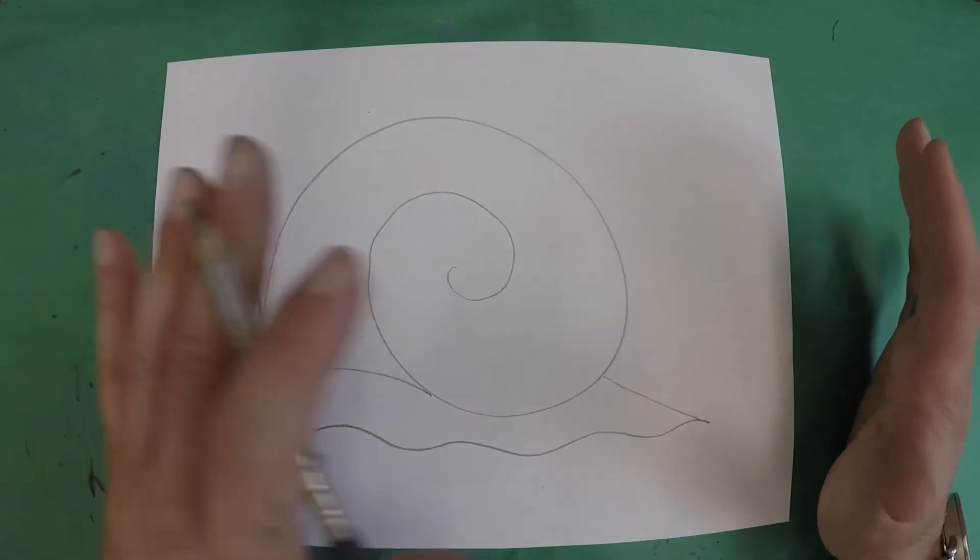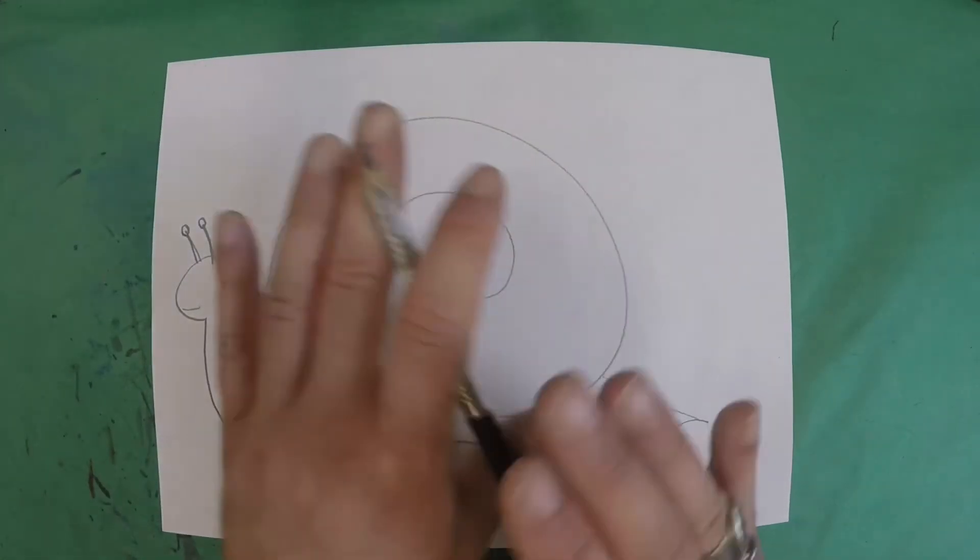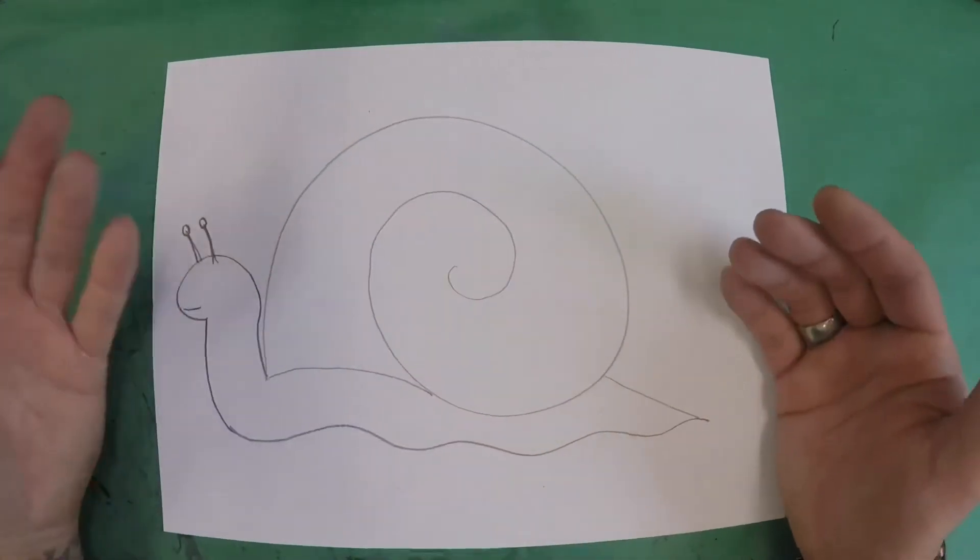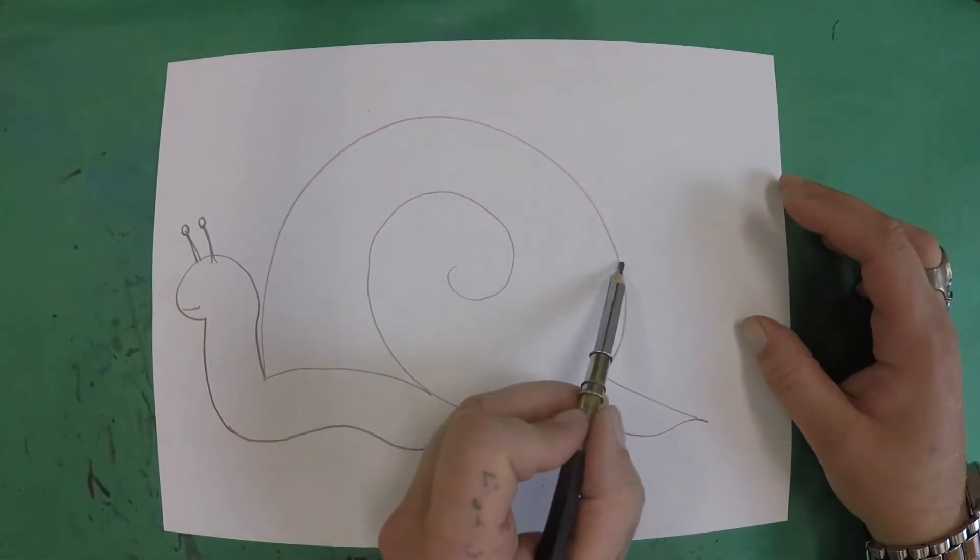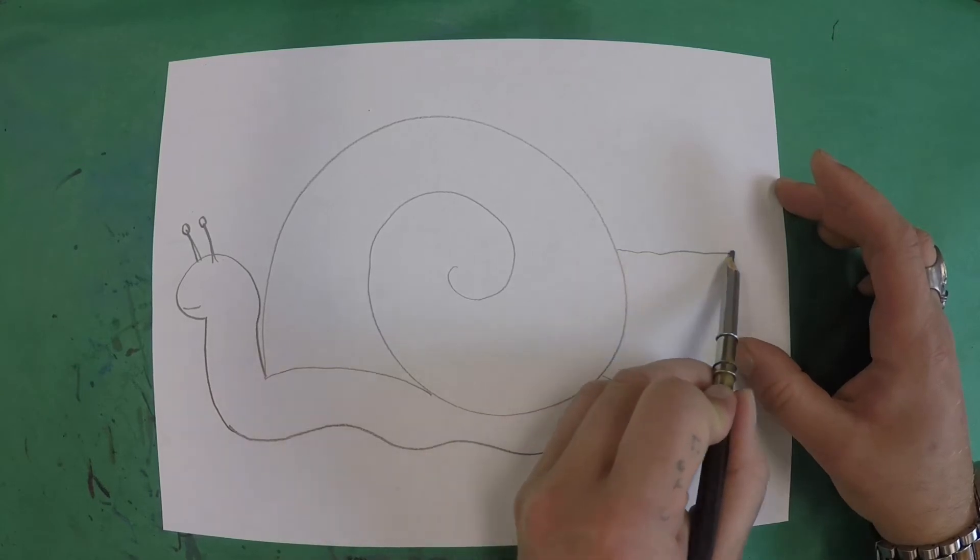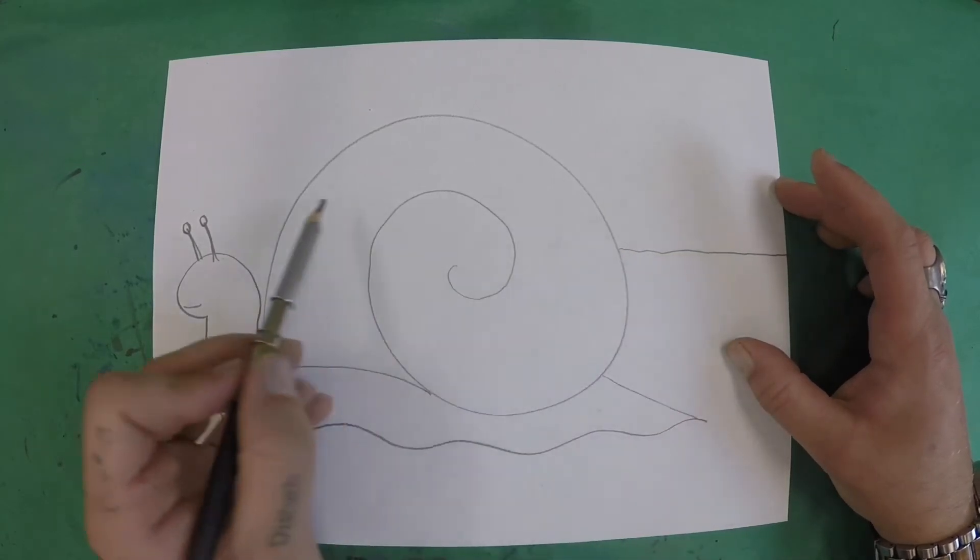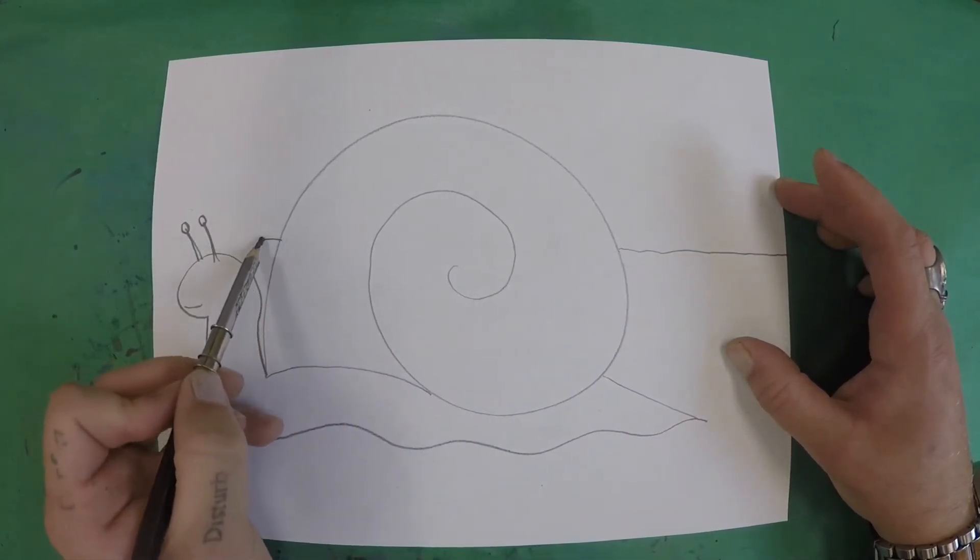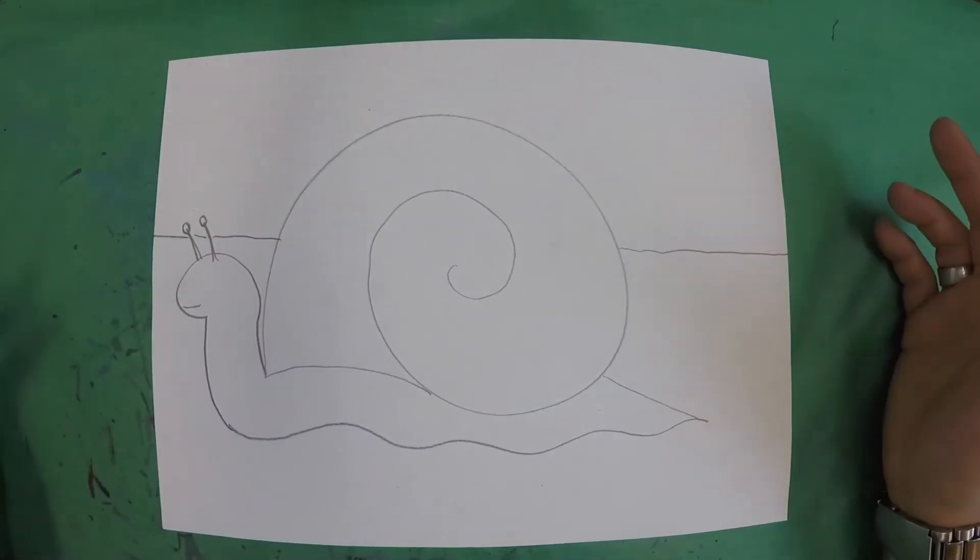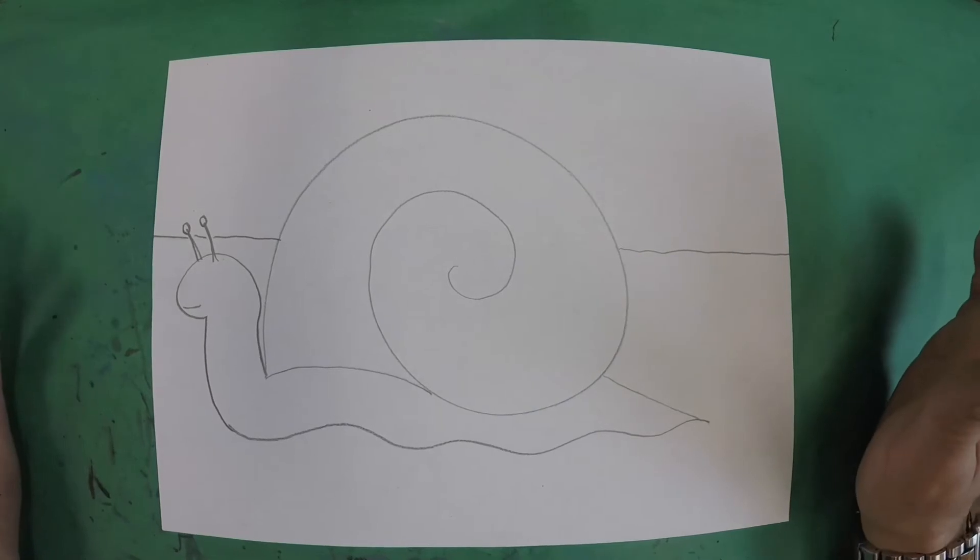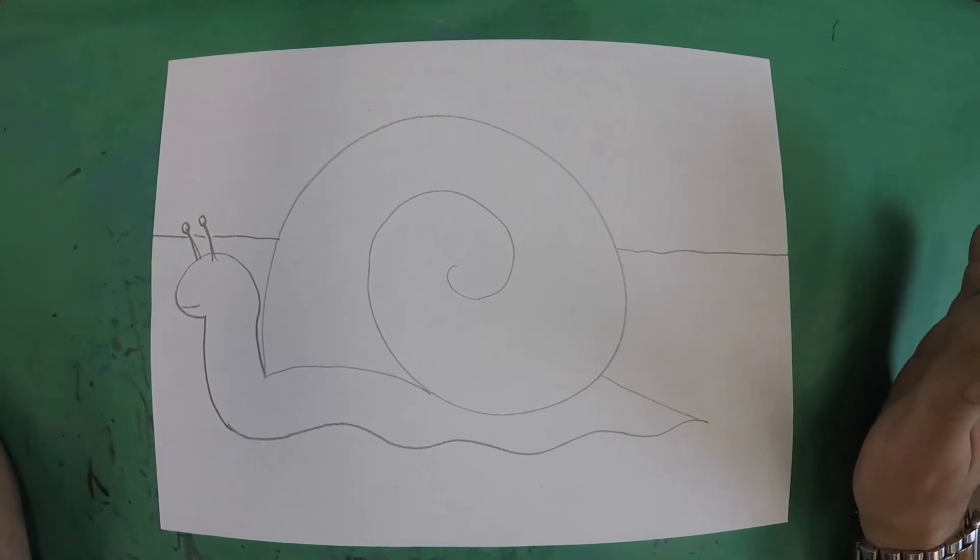Now we want our horizon line to be overlapped by our snail. We want our snail to be in front of our horizon line. So we're going to come about halfway up his shell. Just put that line on this side. And then I'm going to skip over my snail. Put my line on the other side. Now remember your line does not have to look the exact same as mine. It's okay if it doesn't look the same.